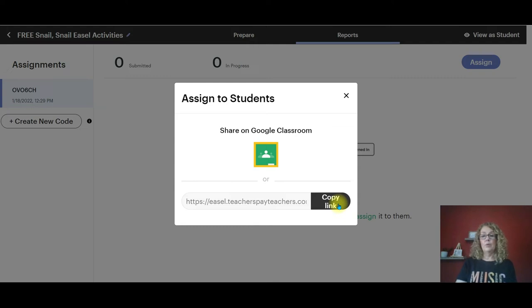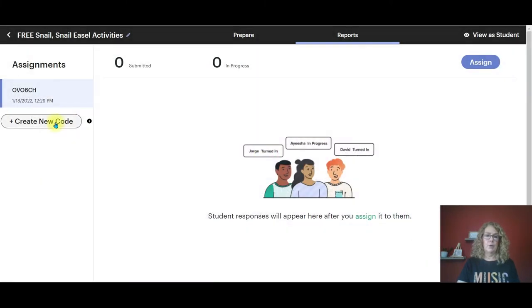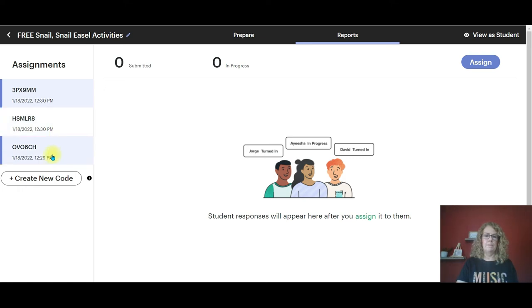If you have more than one class, this is a good tip. If you have more than one class that are going to be doing this assignment and you're going to have them turning it in, you're going to want to generate another code because this will separate the responses by class. For instance if you had a second grade A class, second grade B class, you could make even another second grade C class. Just make sure that you're on the right one. Let's say we're going to assign this to the C class.